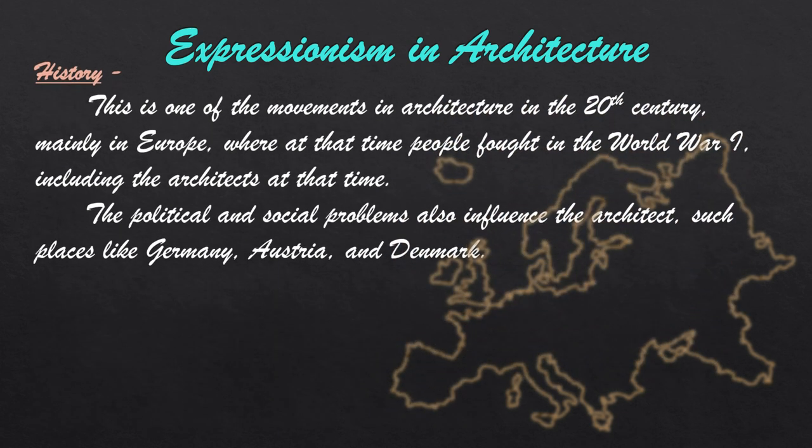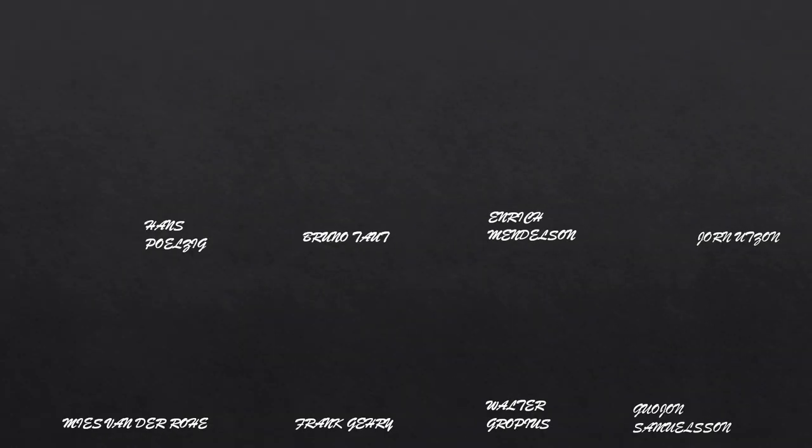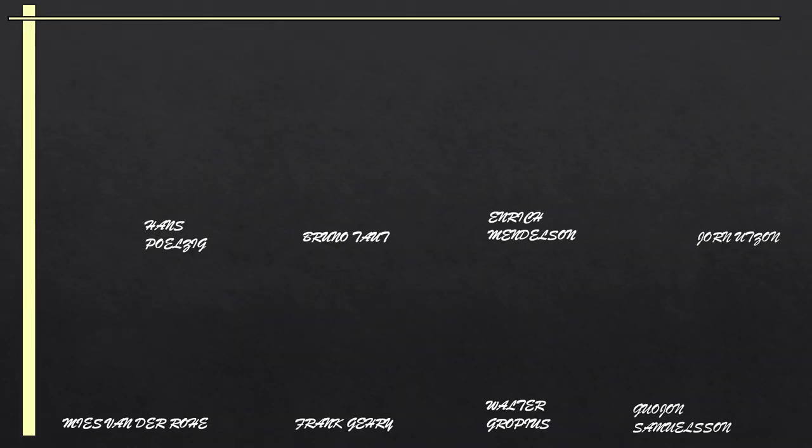History. Expressionism in architecture is one of the defining movements of the 20th century, mainly in Europe. At that time, people fought in World War I, including architects. The political and social problems influenced architects in places like Germany, Austria and Denmark. Here are some famous architects involved in Expressionism.